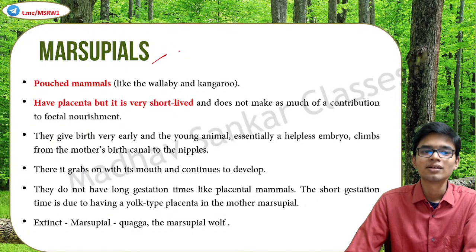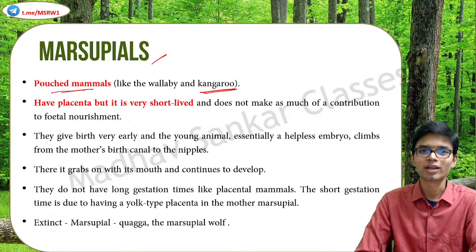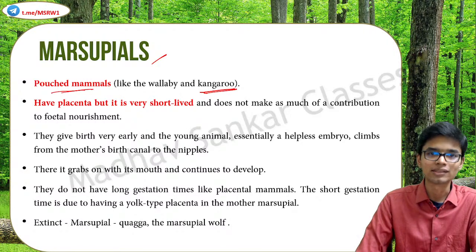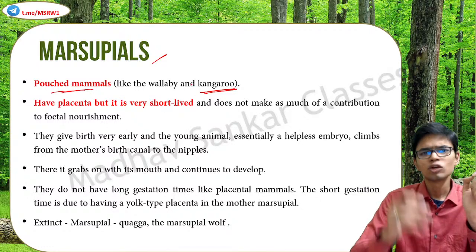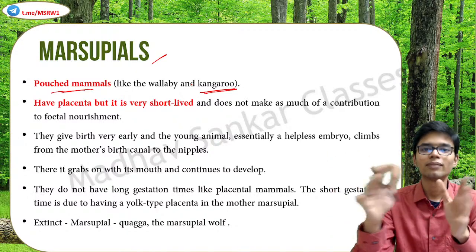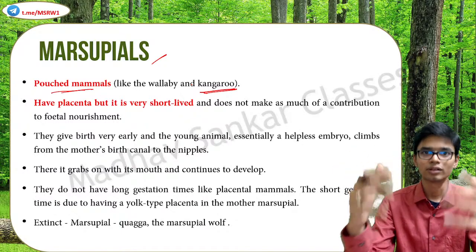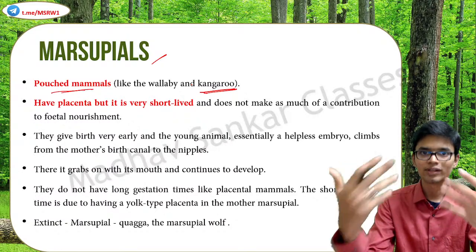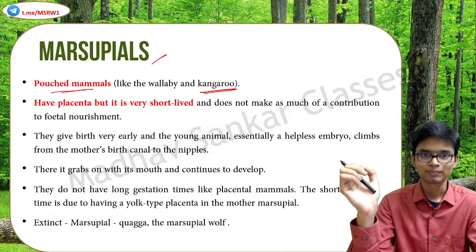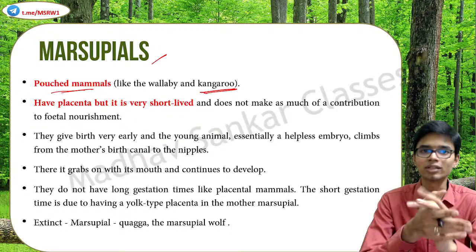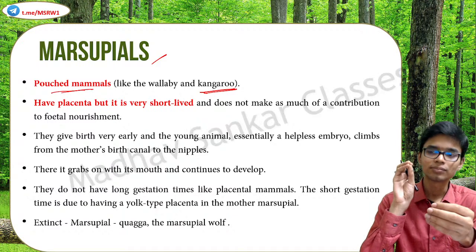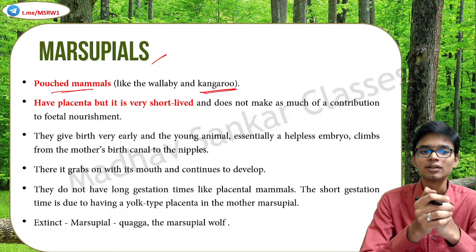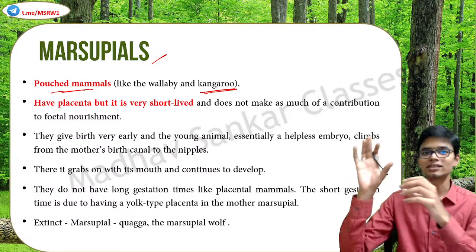What exactly are marsupials? The best example is kangaroo. These are pouched mammals. They are adapted this way because they have a placenta that is very short lived. Human beings and all other mammals have a placenta in which the embryo is grown, nourished, grows into a fetus, and finally after a long gestation period they give birth. But for marsupials this is not the case - although they have a placenta, it is very very short lived.